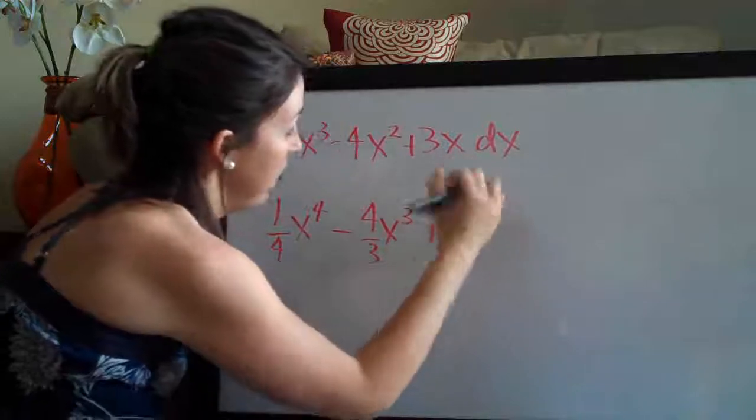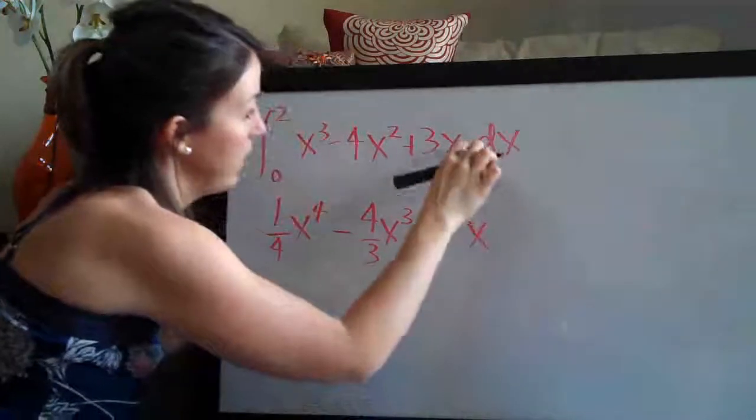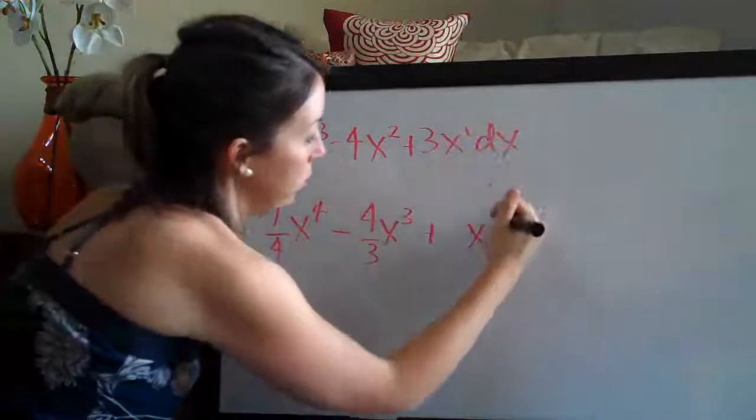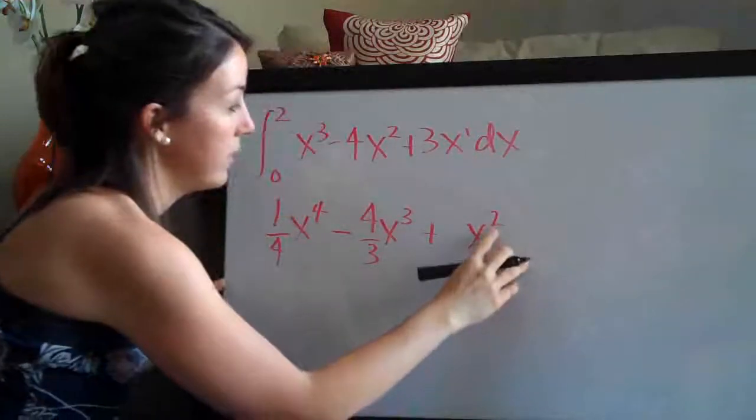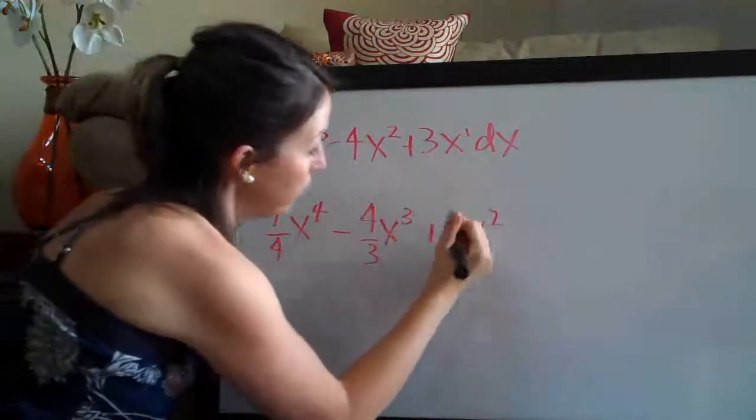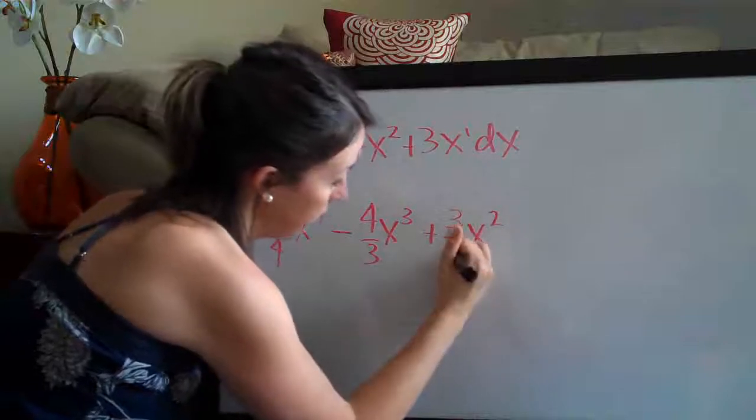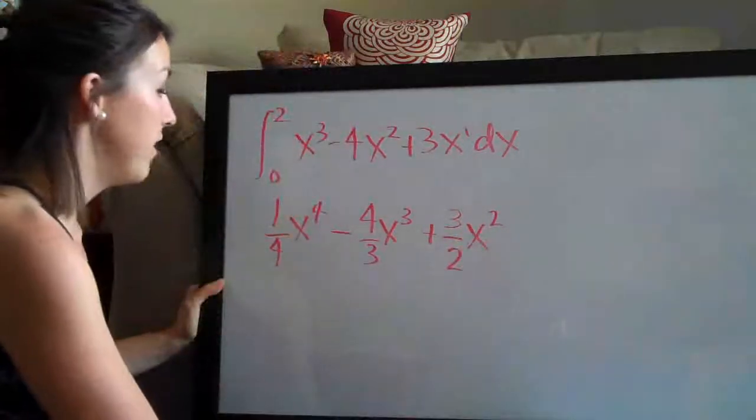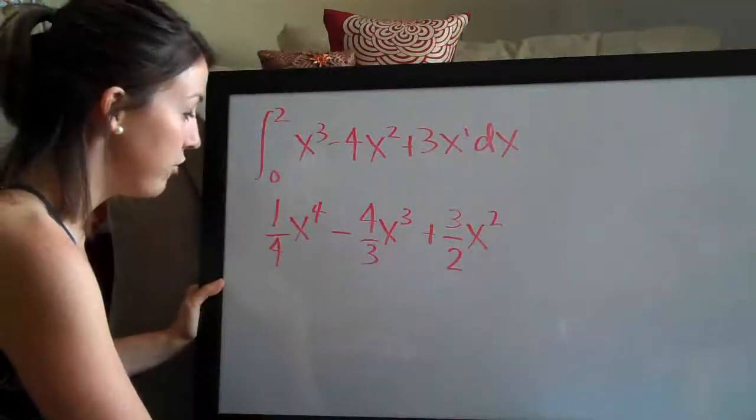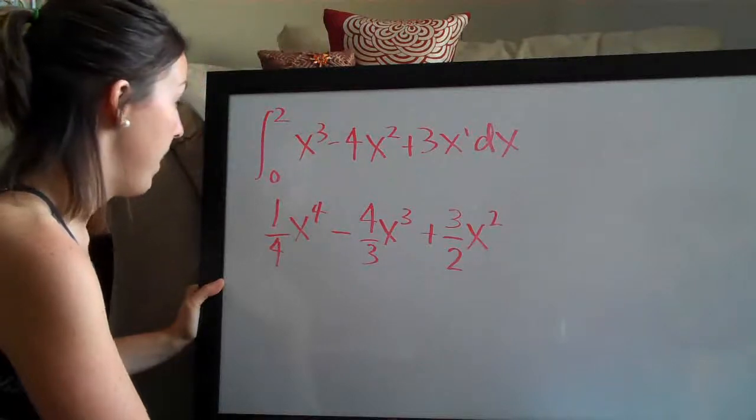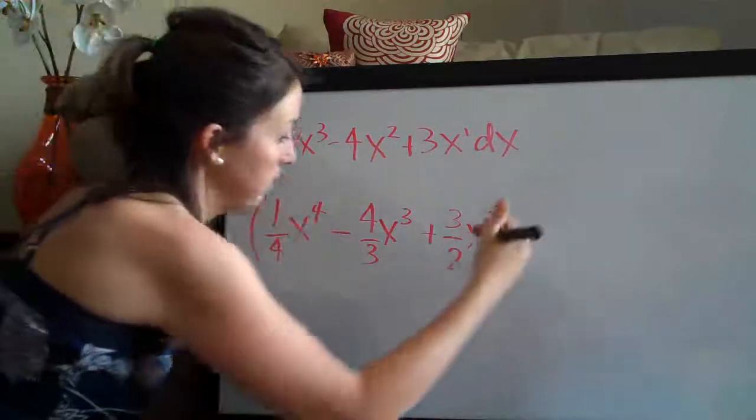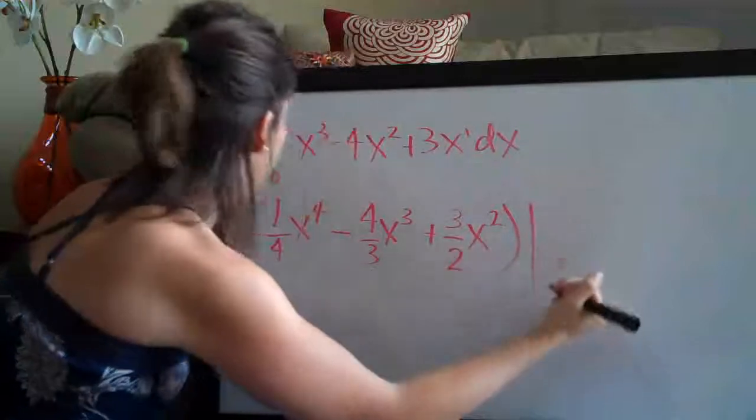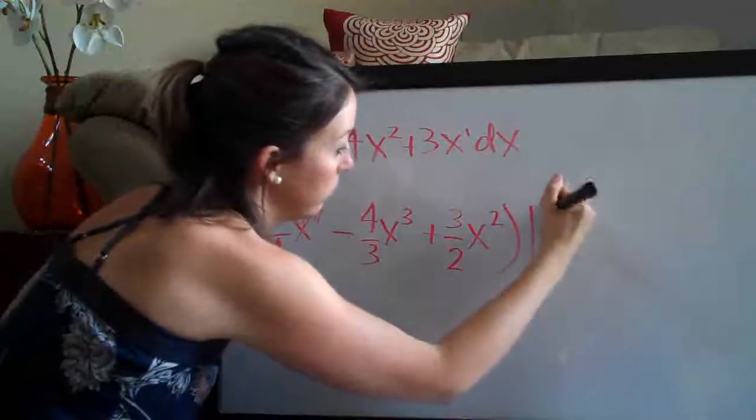And then add 1 to the exponent. Right here it's an implied 1. We're going to add 1 and get 2. And then divide the coefficient, 3, by the new exponent which is 2. So there's our integral and now we need to evaluate on the range 0 to 2.